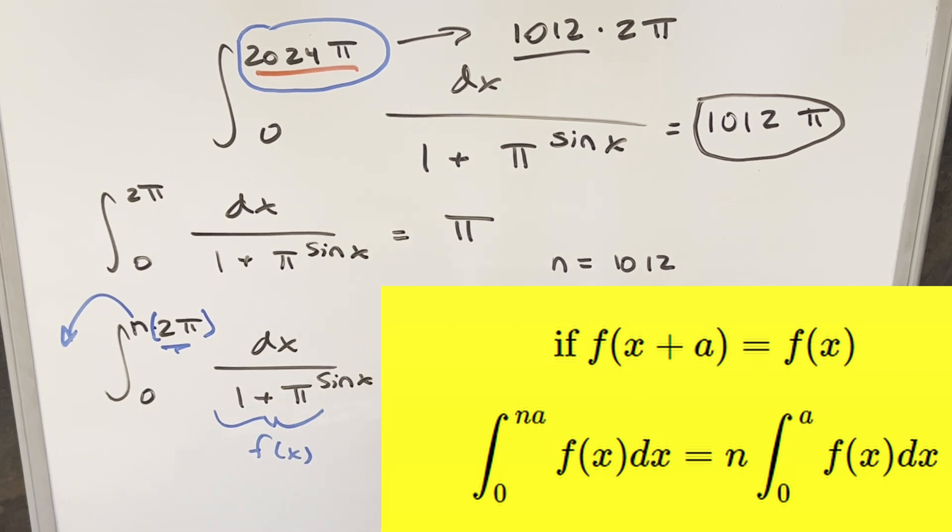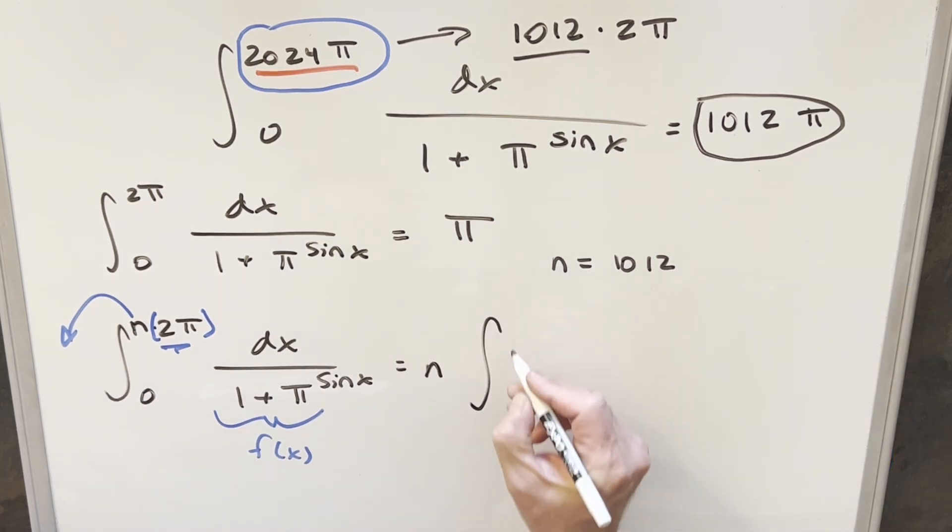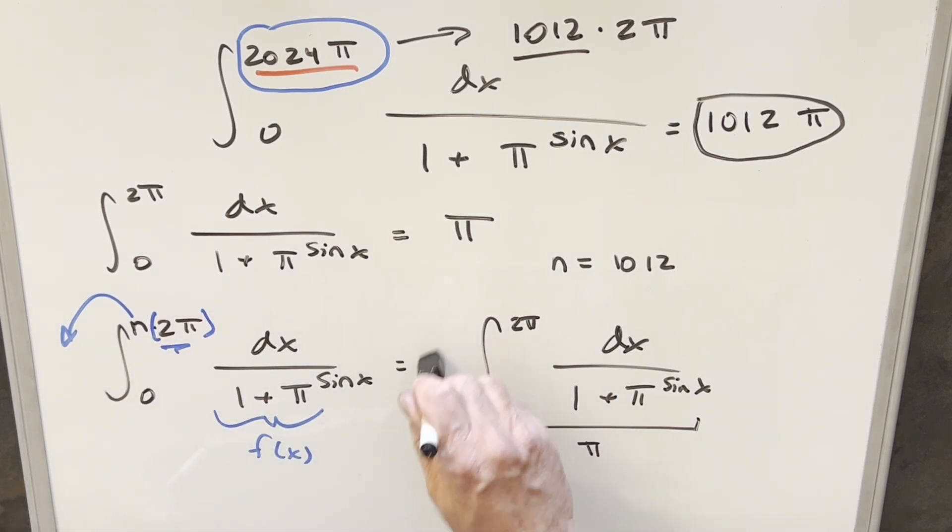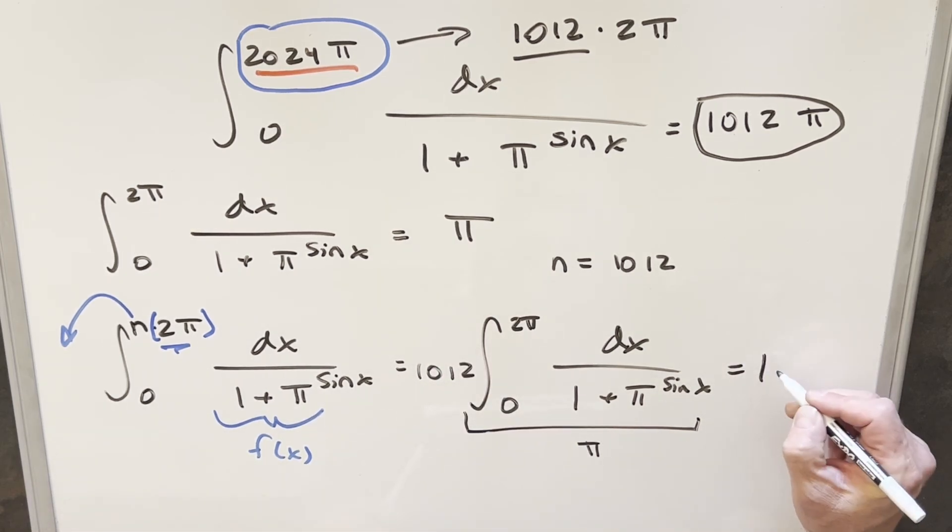So with this check, what that allows me to do is I can then take the n out front of the integral. So using that, we bring the n in front, we rewrite it, we have the integral from 0 to 2π of dx over 1 plus π sine of x. But this thing right here, we determined this was π right there. And then we also, we know our n value is going to be 1012. So for my final solution of this, we just get 1012 times π.